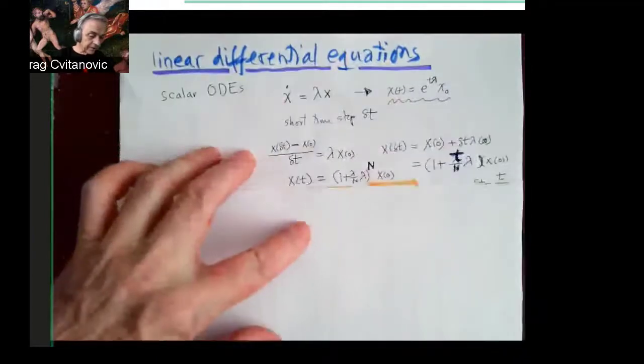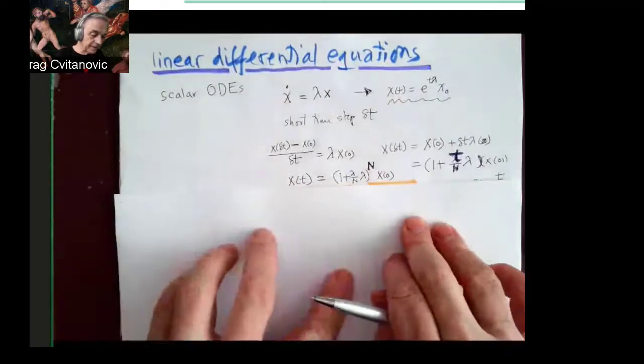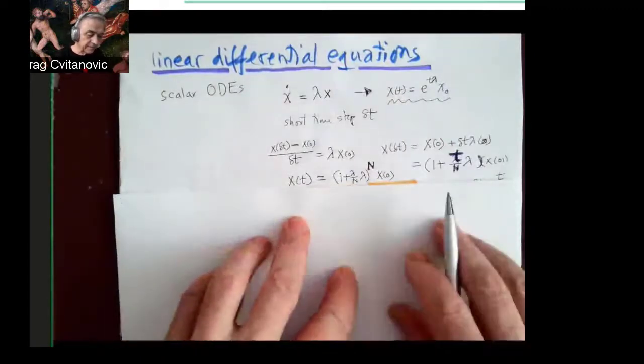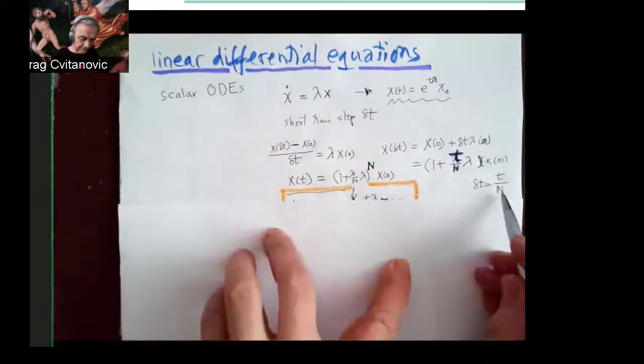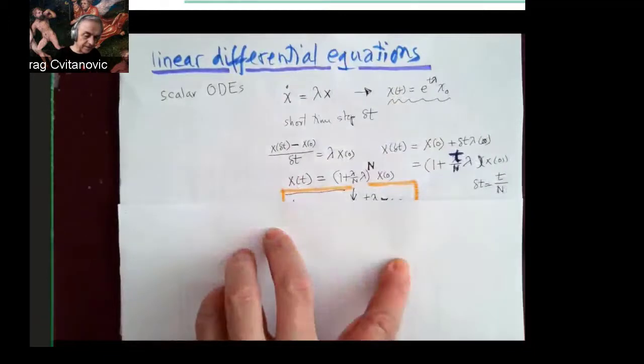So if I step n times, I will advance the time T, because the finite time T is divided in n small steps.